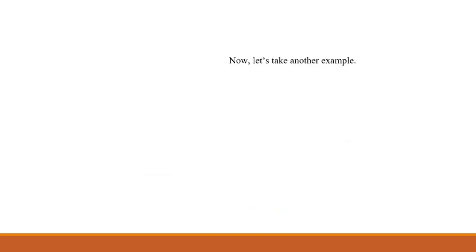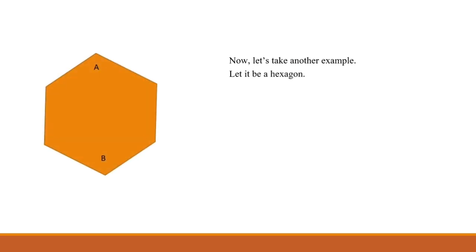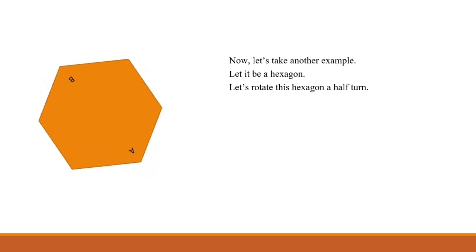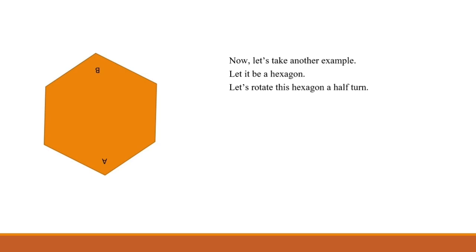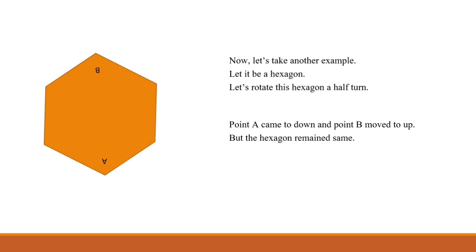Now let's take another example — a hexagon. Let's rotate this hexagon half a turn. Here you can see A is the upper portion and B is the lower portion. Now we are going to rotate this hexagon half a turn. When this hexagon is rotated half a turn, point A came to the bottom and point B moved to the top. But the hexagon remains the same. This type of rotation or turning a figure is called rotational symmetry.